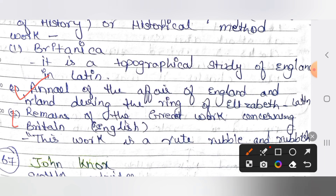The third work is Remains of a Greater Work Concerning Britain. These three are the works by William Camden. This is a collection of historical essays and is the only work that Camden wrote in English. This work was criticized a lot; critics said this work is 'root, rubble and rubbish.'